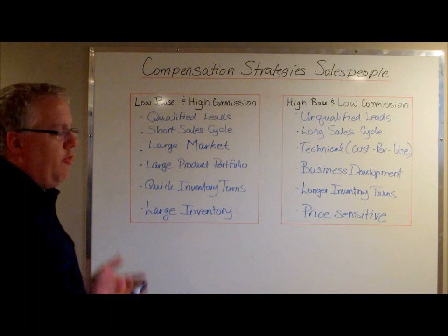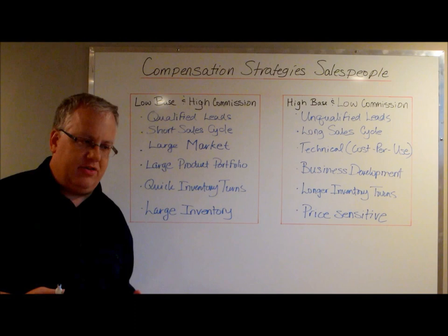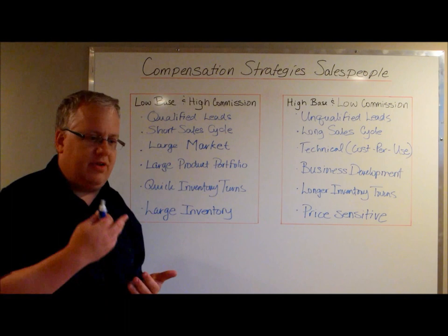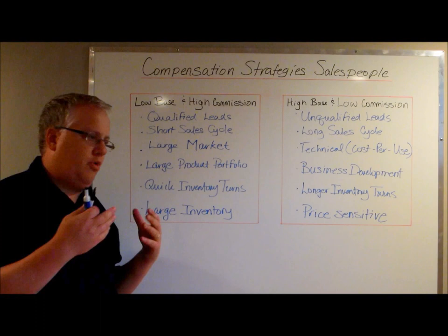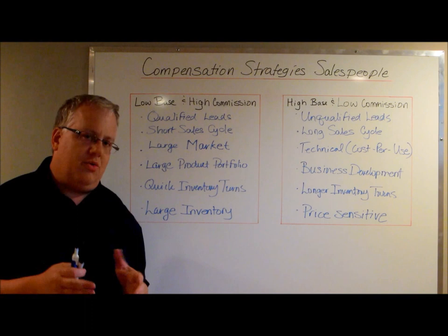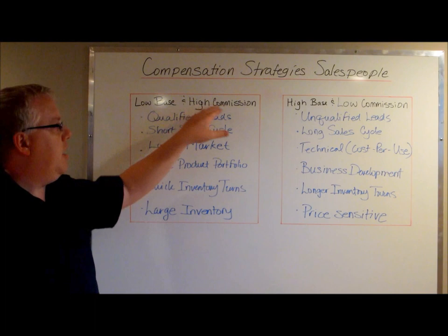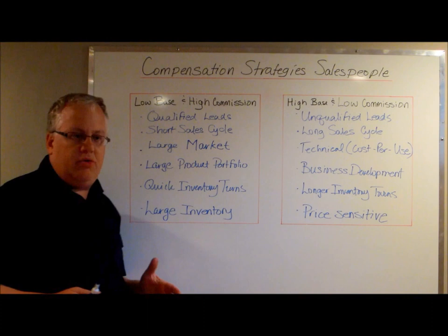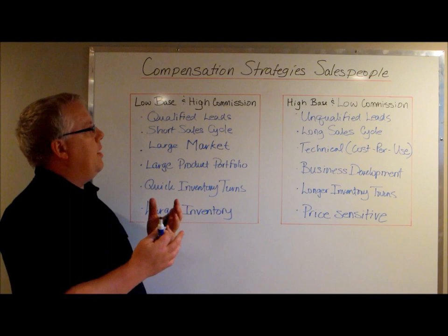So I want to go over today the two most common compensation strategies: whether you go with low base and high commission, or high base and low commission. The purpose of the video is not to talk about whether you should structure the compensation plan around gross profit or sales totals, or the product's profit margins and how you should structure the bonus program. I'm just trying to get you to think about when should you offer a low base and high commission structure, and when should you offer a high base and low commission structure.